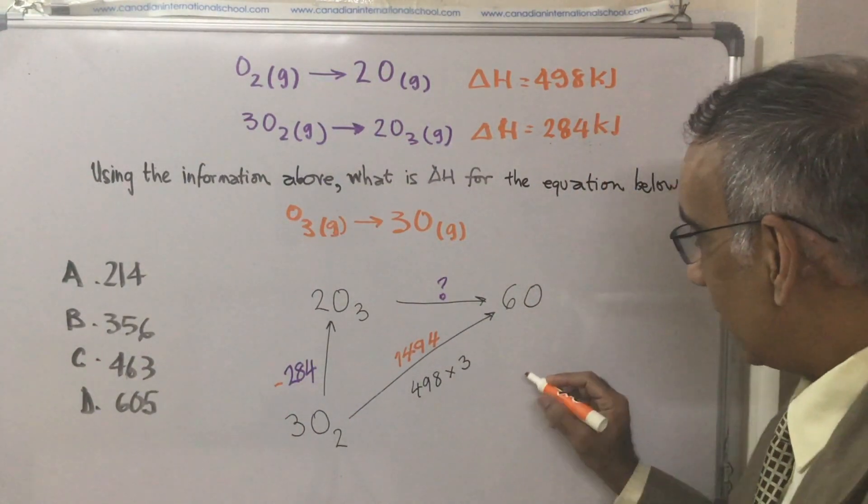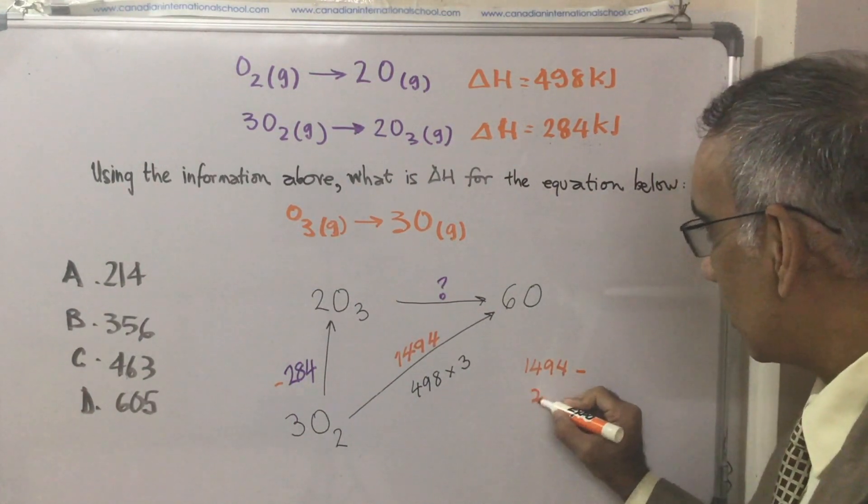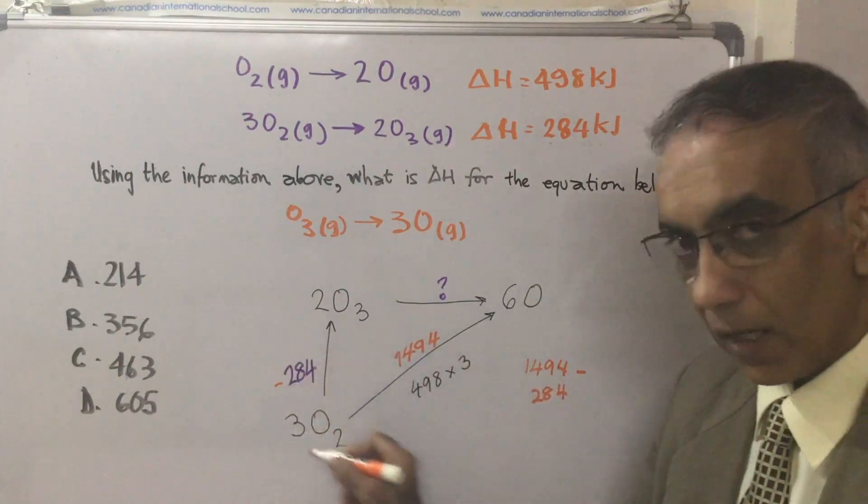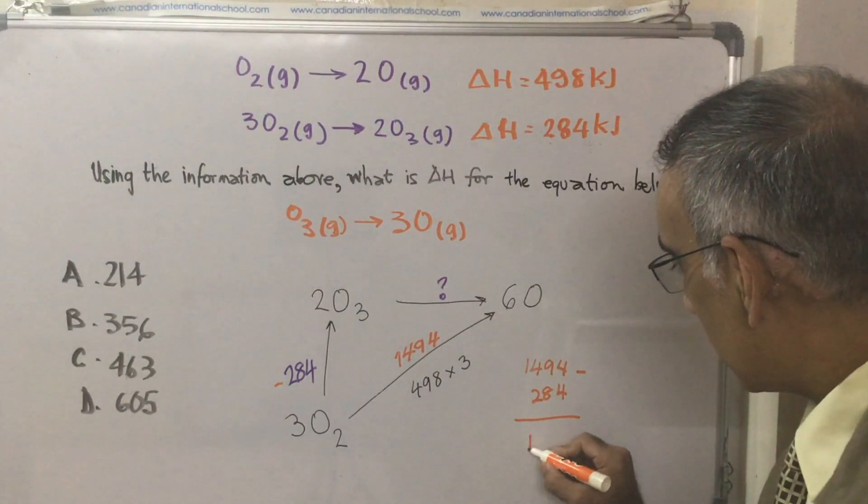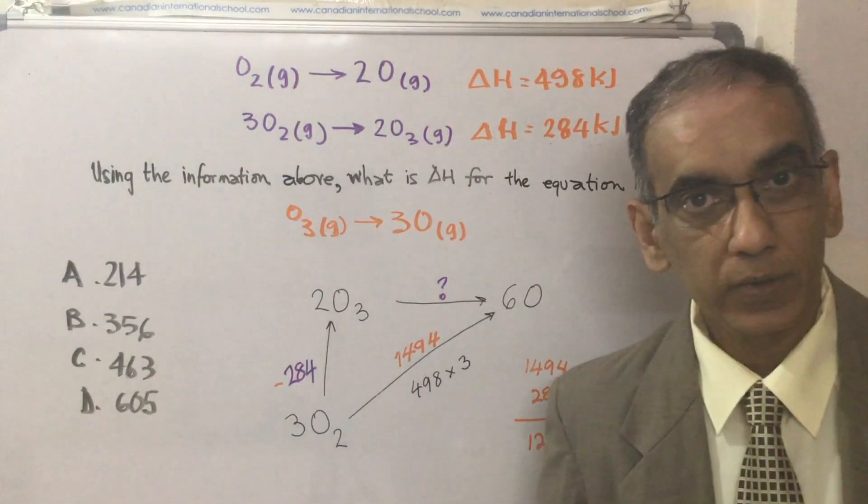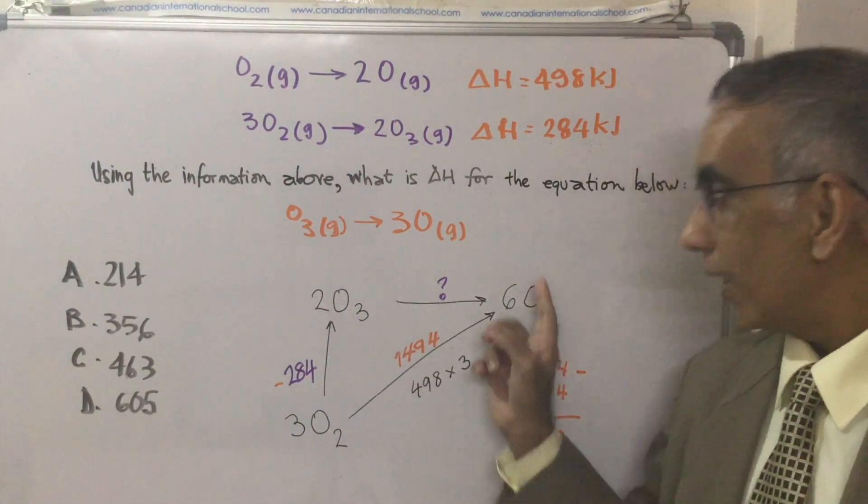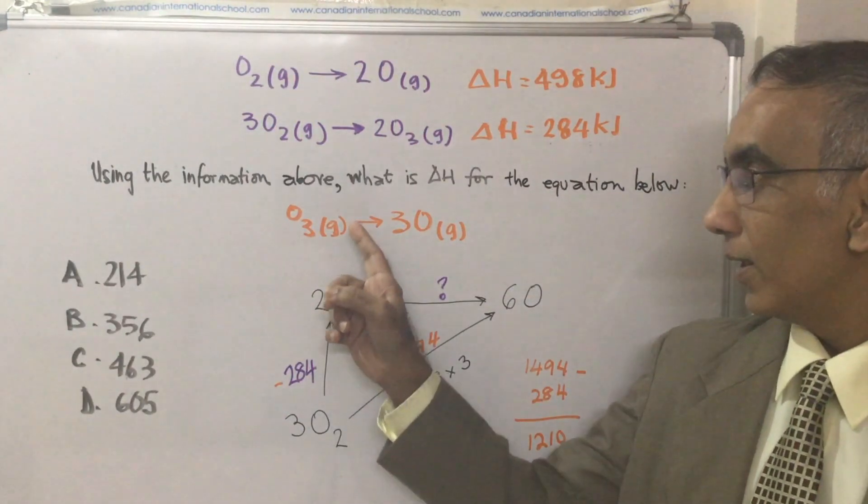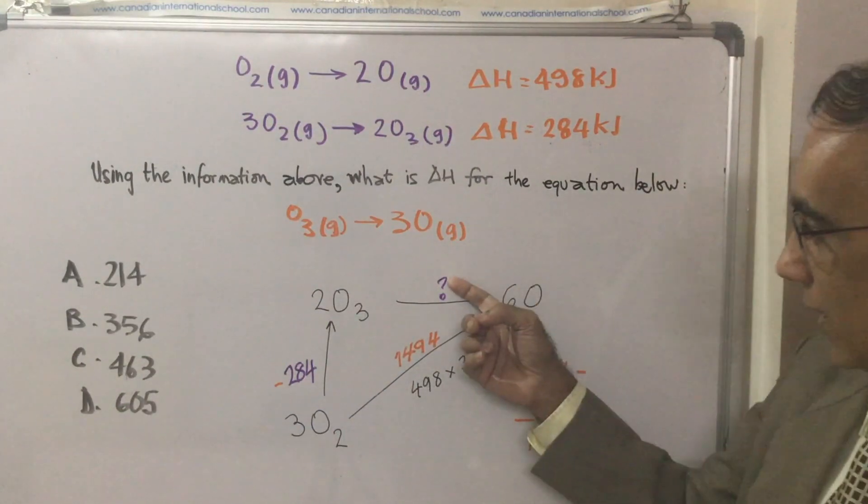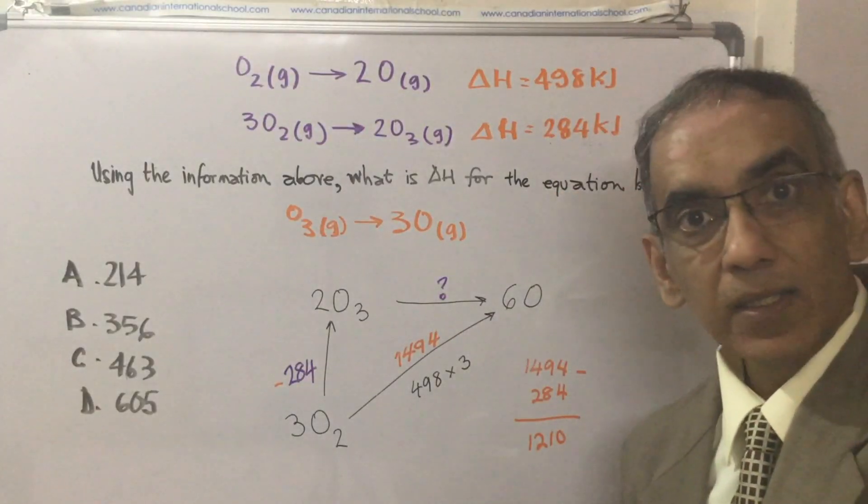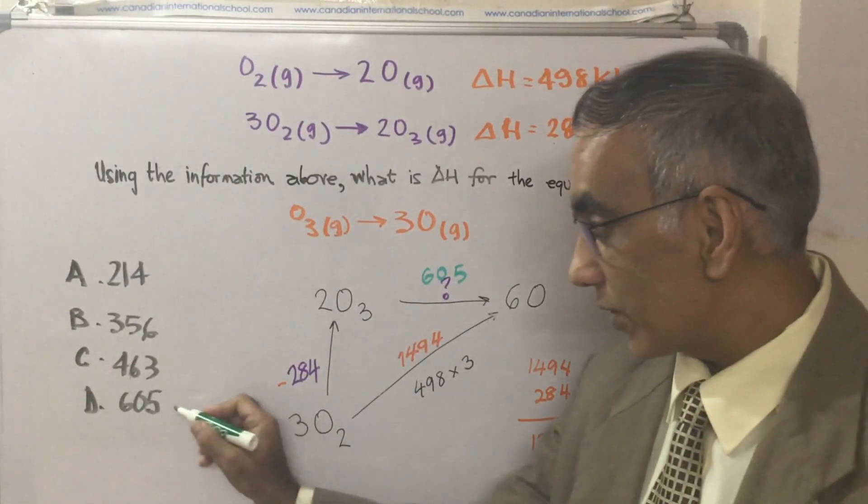This continues in the same direction, so you keep that positive sign. And what you end up having then is 1494 minus 284, which is the sum basically of this plus this. And that comes to 1210 kilojoules. But look at this 2O₃ to give 6O. And what we're trying to solve for O₃ to give 3O. So we've got to get this answer, which fills in here, and then divide it by 2. Doing that would give an answer of 605, and it would confirm that the answer is D.